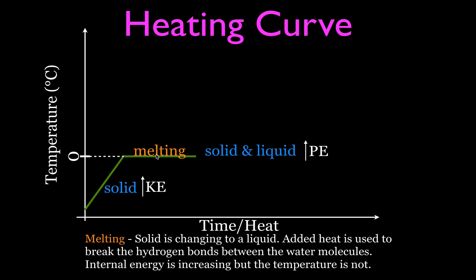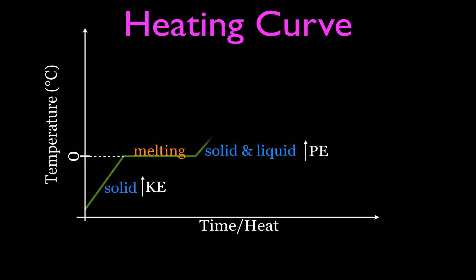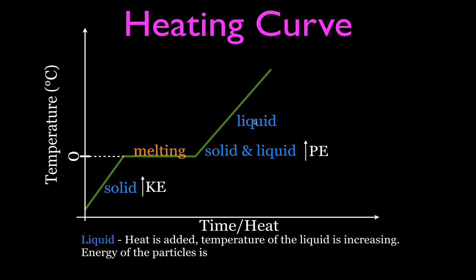Once all the solid is gone we have just a liquid, and as we continue to add heat the temperature rises again. You can see this on the graph as another upward slope. The energy of the particles increases as they move faster and faster, which means kinetic energy — not potential energy — is increasing during this liquid-heating phase.